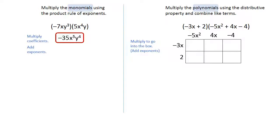The first two are the negative 3x and the negative 5x squared. Negative 3 times negative 5 is positive 15, and adding the exponents 1 plus 2 is 3.